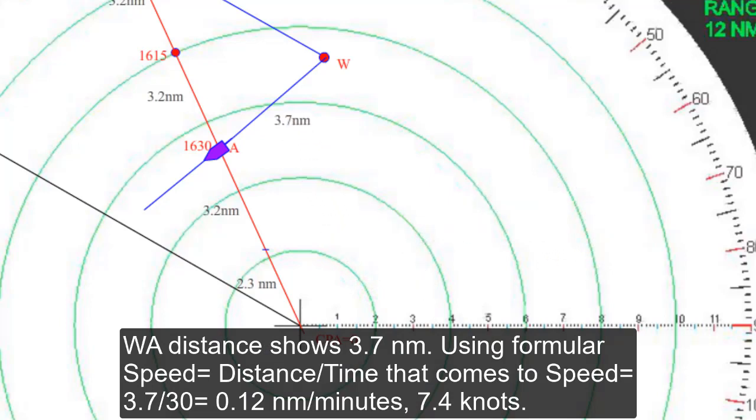Using the formula speed equals distance by time, that comes to speed 3.7 divided by 30, which is 0.12 nautical miles per minute. It is 7.4 knots.